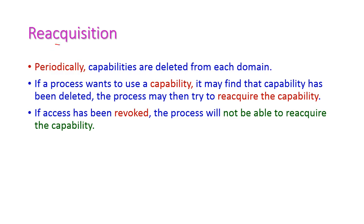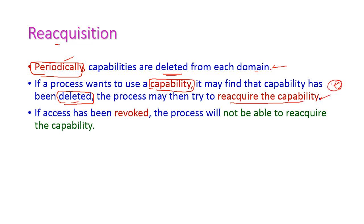In reacquisition, the revocation takes place periodically. That means periodically the capabilities are deleted from each domain. If a process wants to use that capability, it may find the capability has been deleted. If it is deleted, the process tries to reacquire the capability. If the capability has been revoked, the process will not be able to reacquire it.